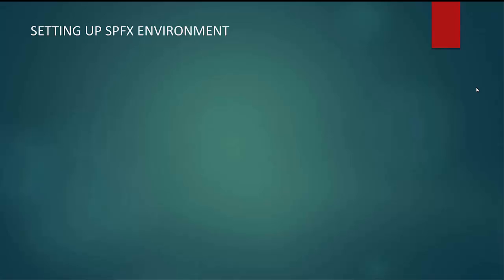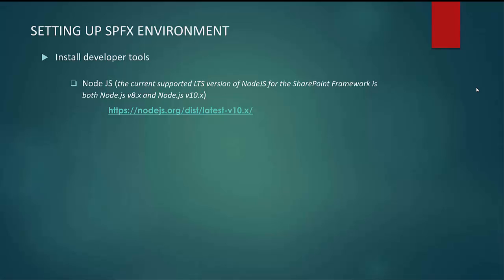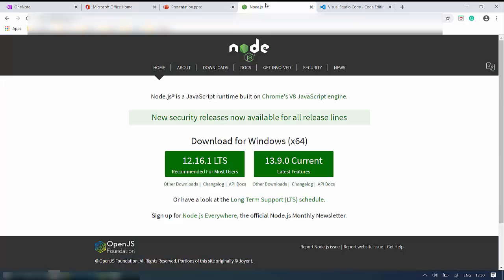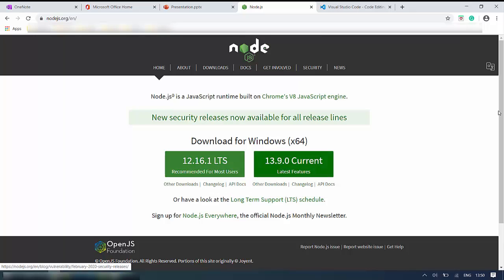The first among the tools that has to be installed is NodeJS, and the current supported LTS versions are v8.x and v10.x series. We have to download NodeJS from the NodeJS.org URL. If you browse NodeJS.org, you will be able to see the latest versions available, which is the 12-point series. We are going to develop SharePoint framework and the supported LTS versions for SharePoint framework are the 10-point series and 8-point series.